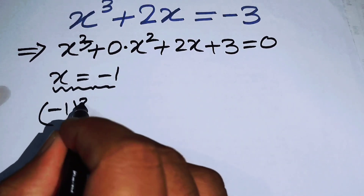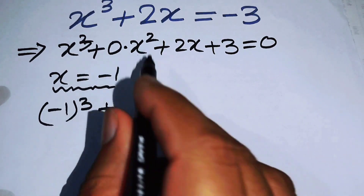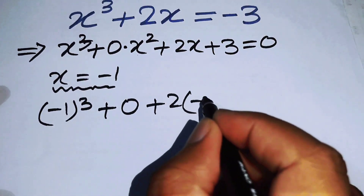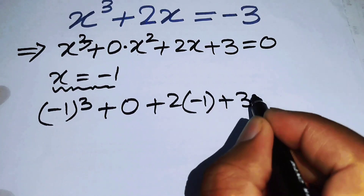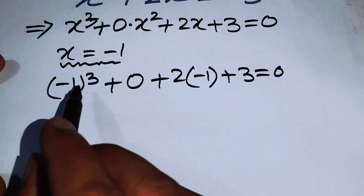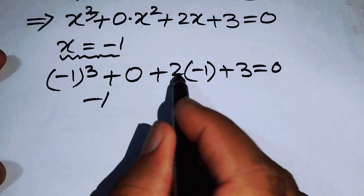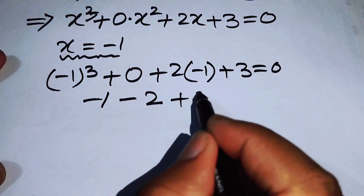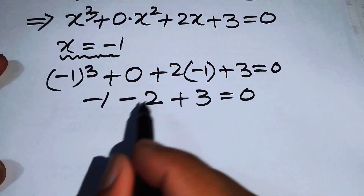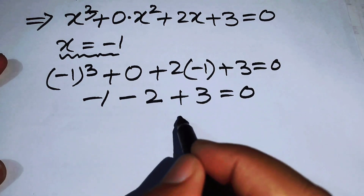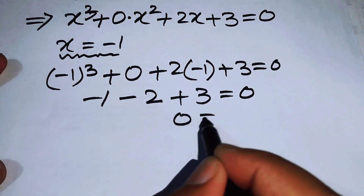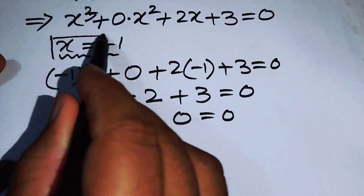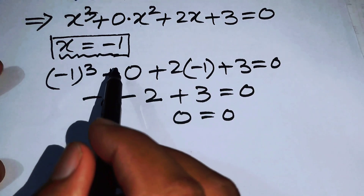Substituting x equals minus 1: it becomes minus 1 cubed plus 0 times x squared plus 2 times minus 1 plus 3 equals 0. That gives us minus 1 plus 0 minus 2 plus 3 equals 0, so minus 3 plus 3 equals 0, which is 0 equals 0. This means x equals minus 1 satisfies the given equation.